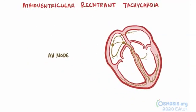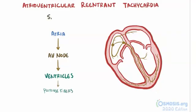Usually the only place where a signal can go from the atria to the ventricles is at the AV node, and once that signal gets to the Purkinje fibers, it stops, and the heart tissue waits for another signal from the SA node.